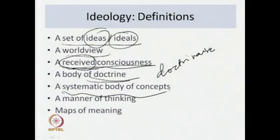Next, ideology is also a manner of thinking — a way of thinking. Obviously, if you hold a certain systematic collection of ideas and concepts, a world view, a received consciousness that becomes almost a doctrine, you would have a certain way of thinking. This way of thinking is determined by all that has gone before — the ideas cohering together, being consistent, creating a certain consciousness — and these are what go into a certain style of thinking.